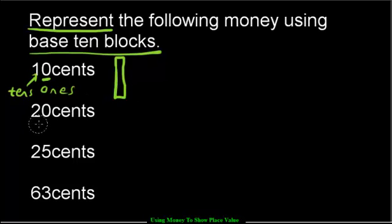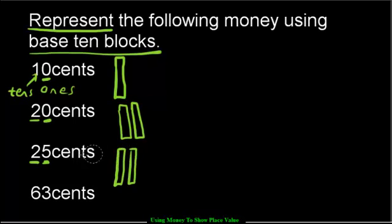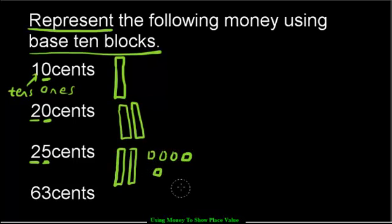How about 20 cents? We need two tens and zero ones. So we're going to have two of the long skinny ones, and then zero ones. This is 20 cents. How about 25 cents? Twenty-five cents is almost like 20 cents — we still need two tens. The only difference now is I need five ones. So I'm going to put one, two, three, four, five. You have five ones and two tens.